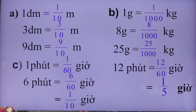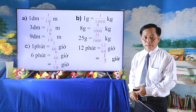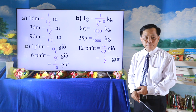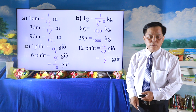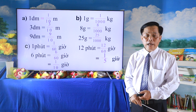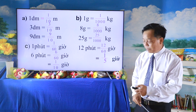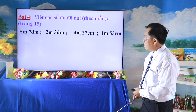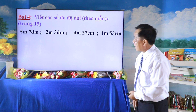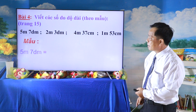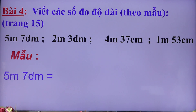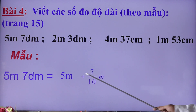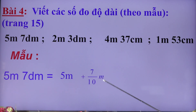Các em đối chiếu kết quả của các em với kết quả trên màn hình của thầy. Thầy tin chắc các em có kết quả đúng. Thầy chúc mừng các em. Để các em tiếp tục đổi đơn vị đo từ 2 tên đơn vị ra thành số đo 1 tên đơn vị như thế nào thì qua bài tập số 4: viết các số đo độ dài theo mẫu. Làm mẫu: 5 mét 7 đề xi mét đổi ra mét bằng 5 cộng 7/10 mét, gom lại thành 5 và 7/10 mét.